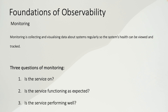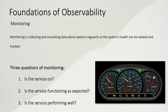As an example, we can think of a car's dashboard. By looking at this example dashboard, we can tell that the service is on because the engine RPM is above zero, so the engine is on. Is the service functioning as expected? Yes, because what we expect from a car is movement, and we can see the car is moving at 50 kilometers an hour.